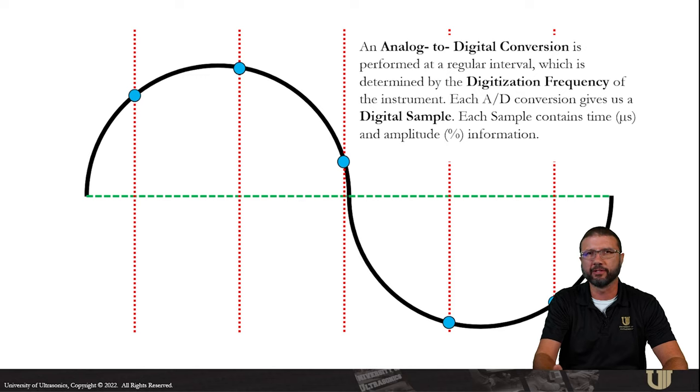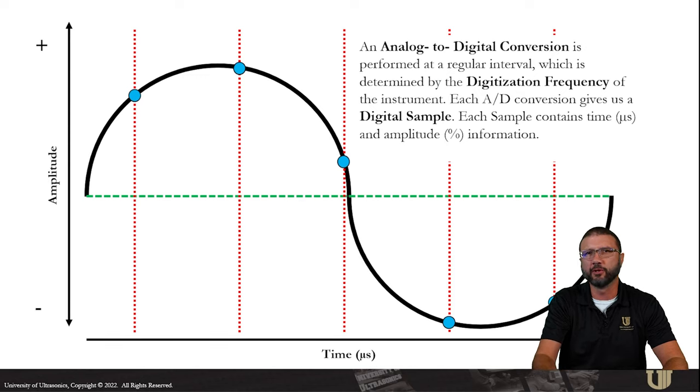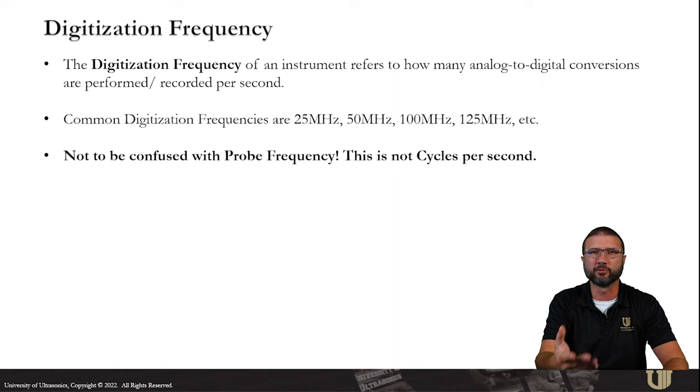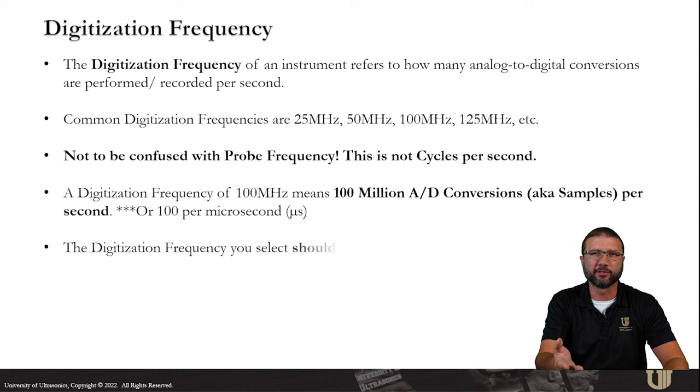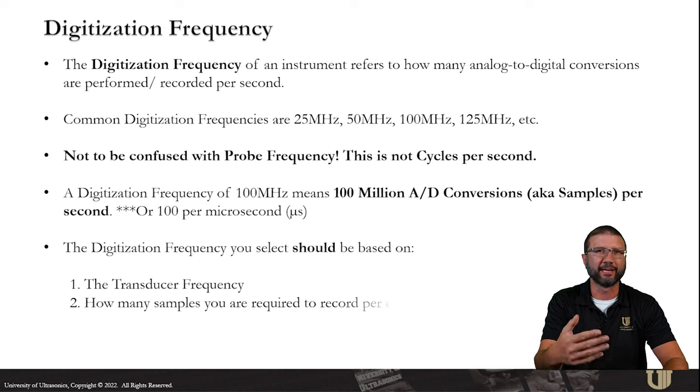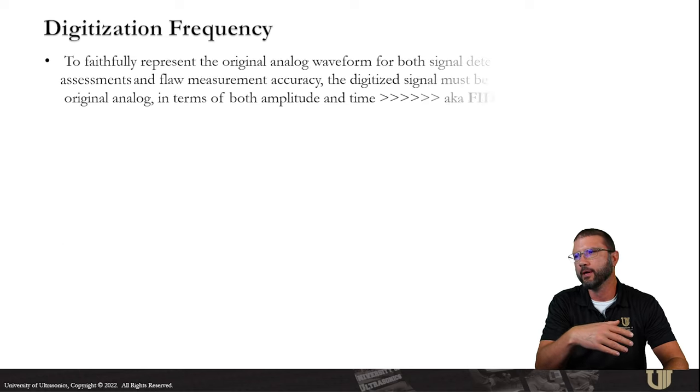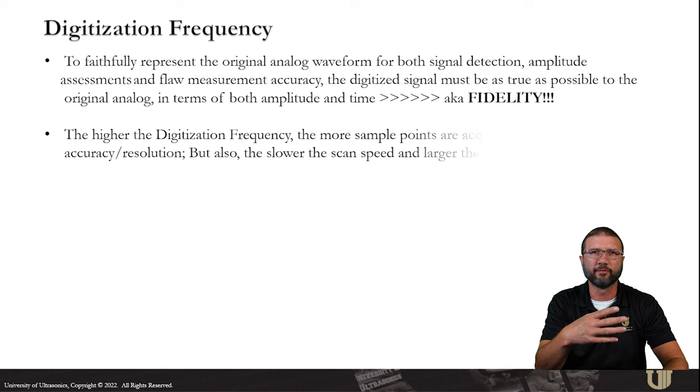We have an analog to digital conversion that's performed at some kind of regular interval. That's going to be driven by our digitization frequency. Every analog to digital conversion gives us a digital sample. Every sample contains time and amplitude information. The digitization frequency refers to how many analog to digital samples we get per second. We don't want to confuse this with our probe frequency. This is analog to digital samples per second, not cycles per second. Some common frequencies are 25, 50, and 100 megahertz. The digitization frequency we use should be based on the transducer frequency and how many samples we might be required to get for whatever code or procedure we're working to.